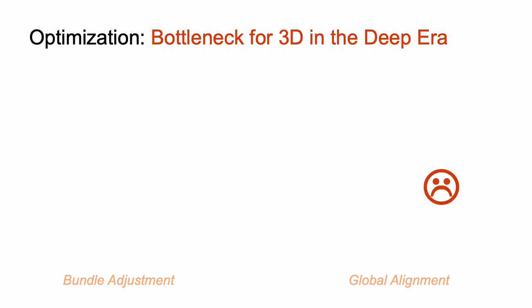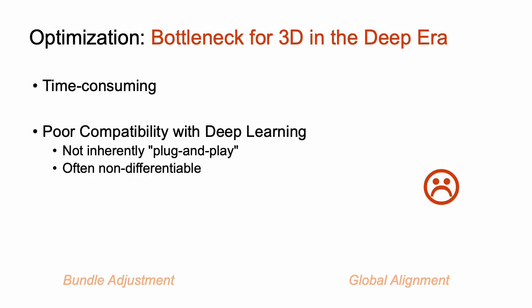However, optimization is far from seamless and it is a bottleneck for 3D vision in the decade of deep learning. First, optimization is often very time consuming, taking tens of seconds or minutes. Next, optimization is poorly compatible with deep learning — it cannot work as a plug-and-play component and is usually not differentiable. Finally, optimization often relies on complex engineering designs. For non-experts, it is hard to debug and frankly, quite scary.